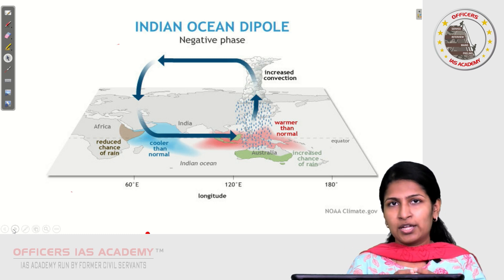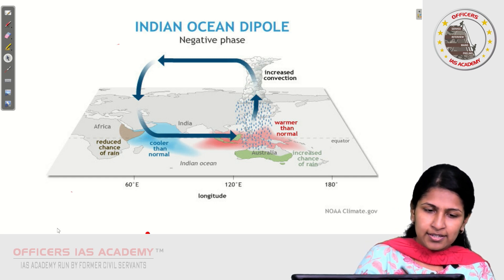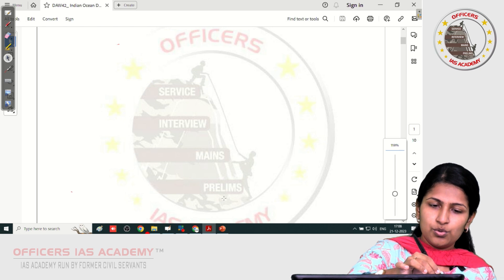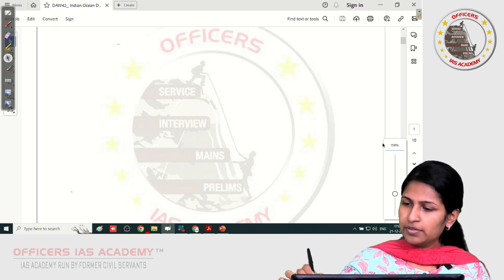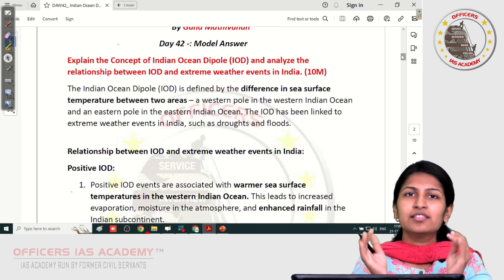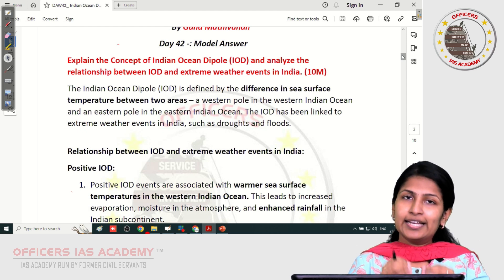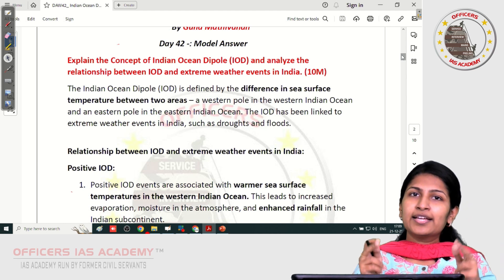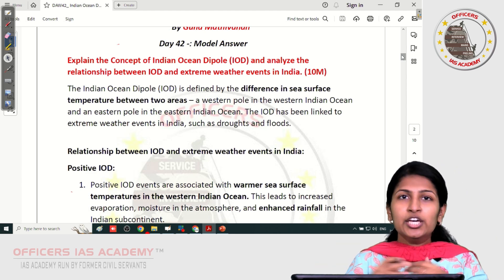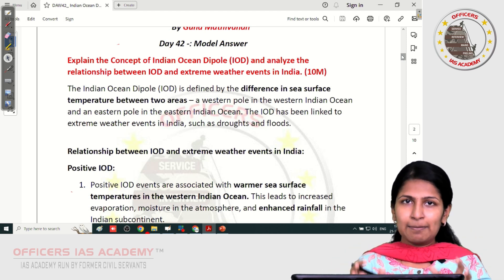Now we are going to discuss the impact of the Indian Ocean Dipole with respect to India and weather events in India. The question asks you to explain the concept of IOD — giving the definition and writing about the positive phase as well as the negative phase is important, because both of them can have different impacts with respect to the Indian weather condition. You cannot continue the answer by just mentioning Indian Ocean Dipole generally, because different phases will have different impacts with respect to the weather events.